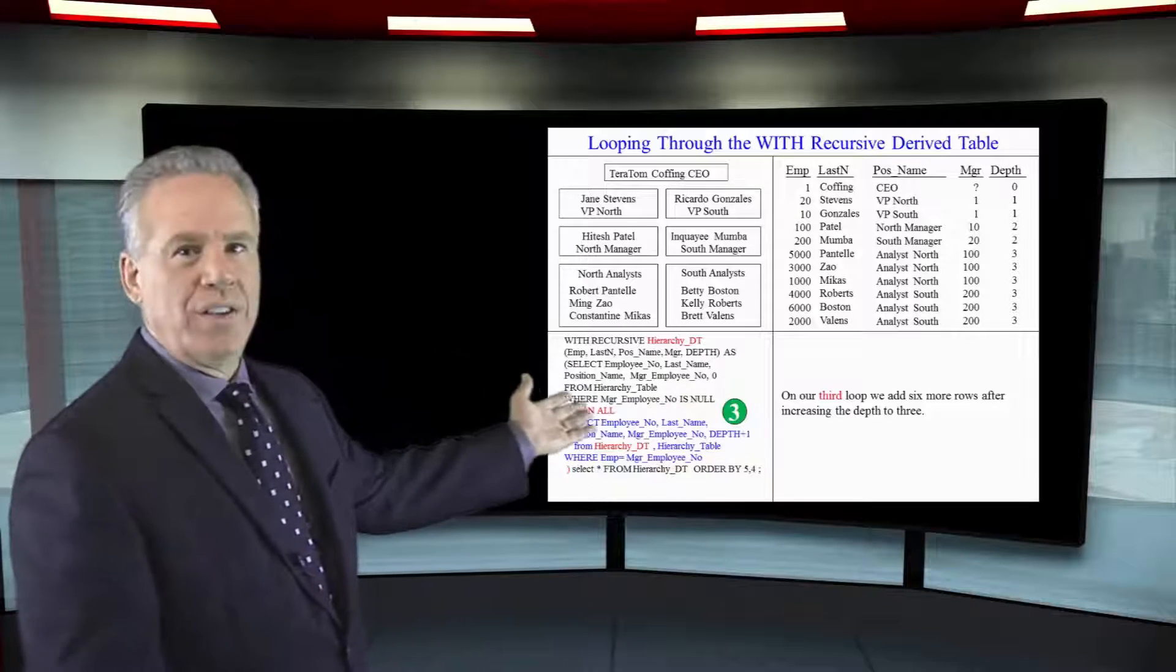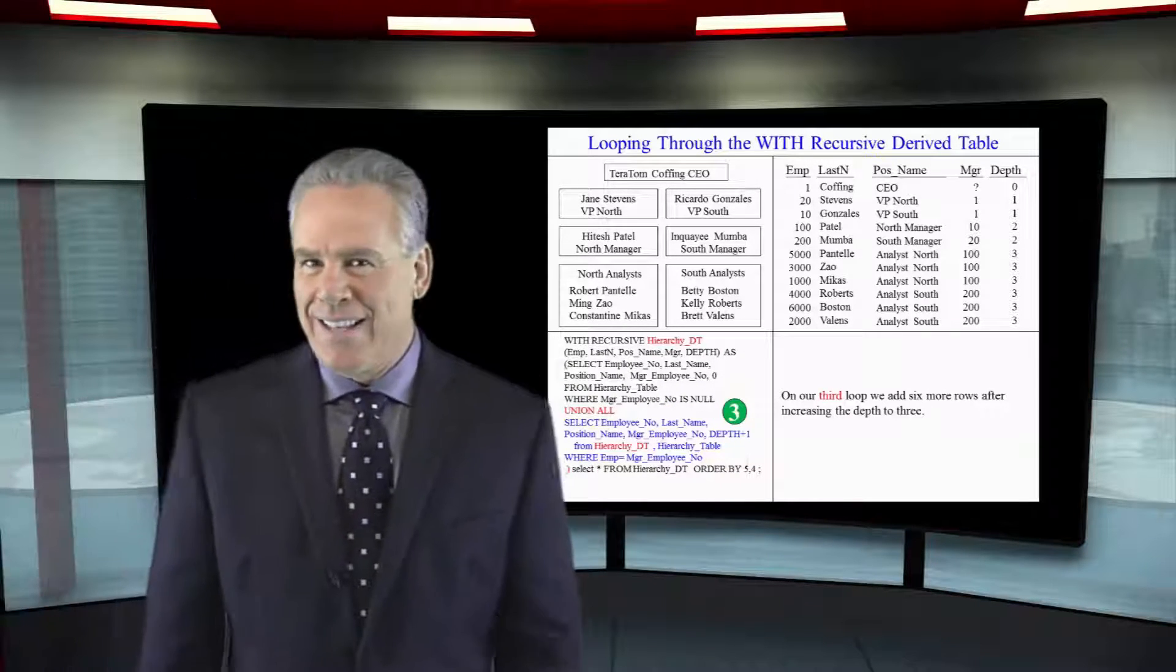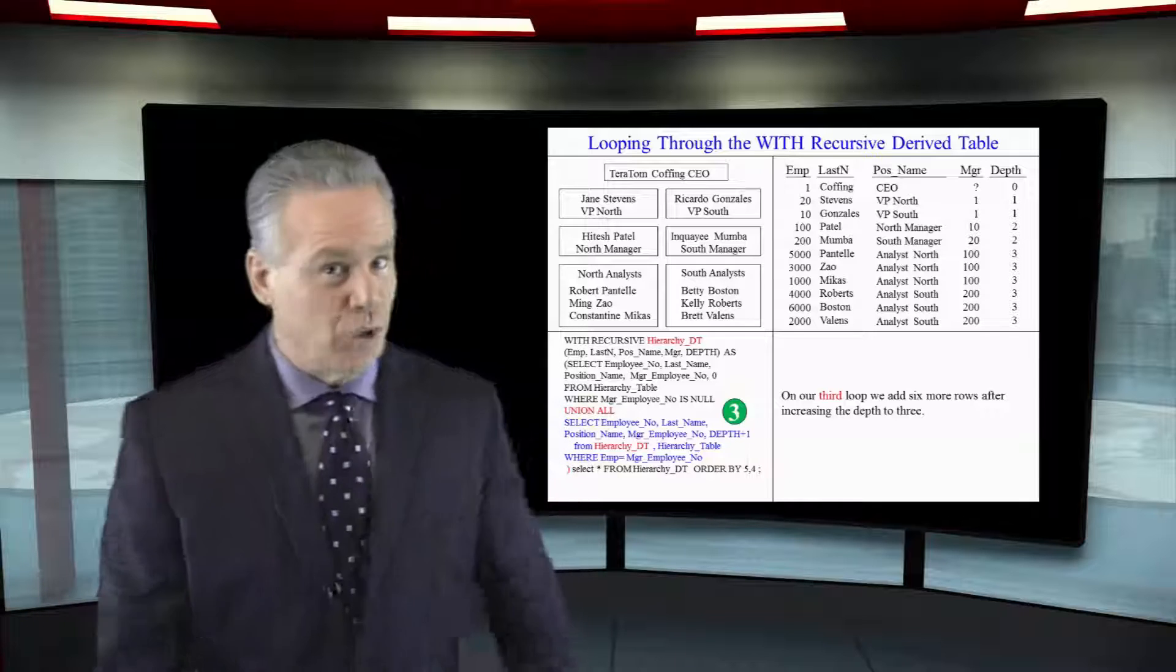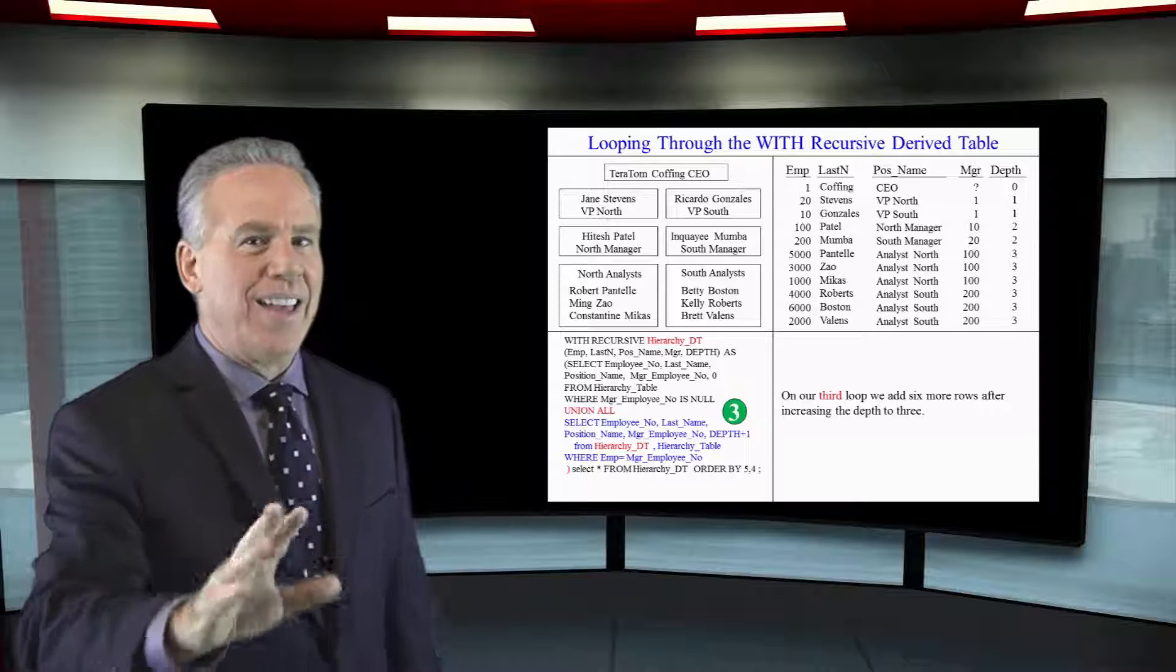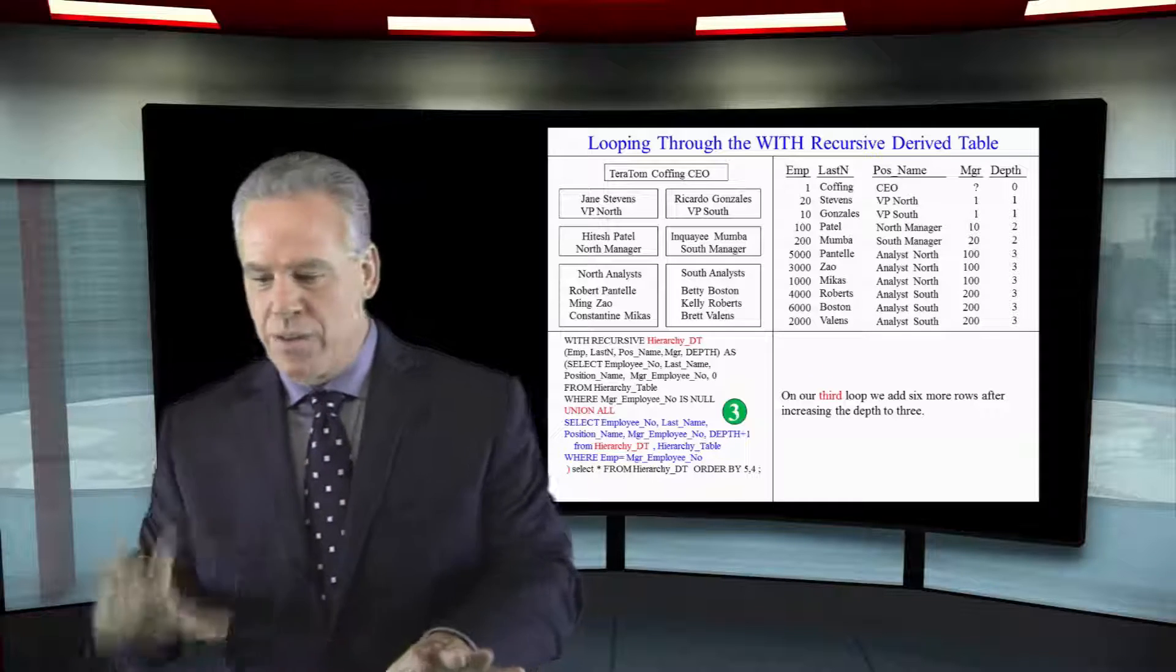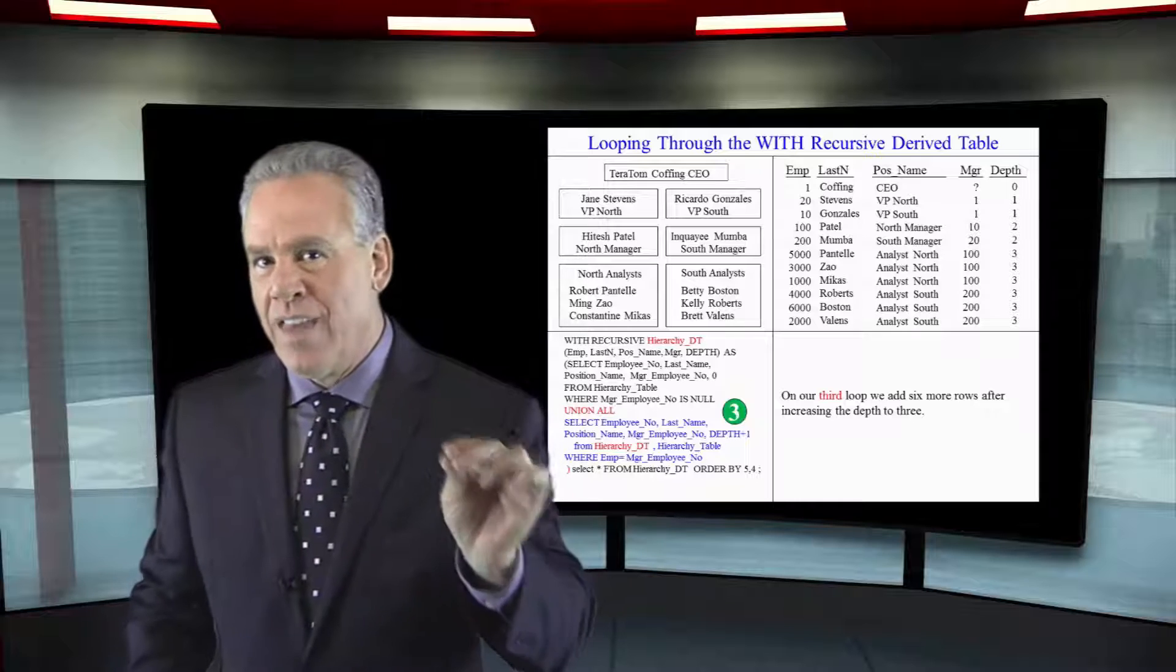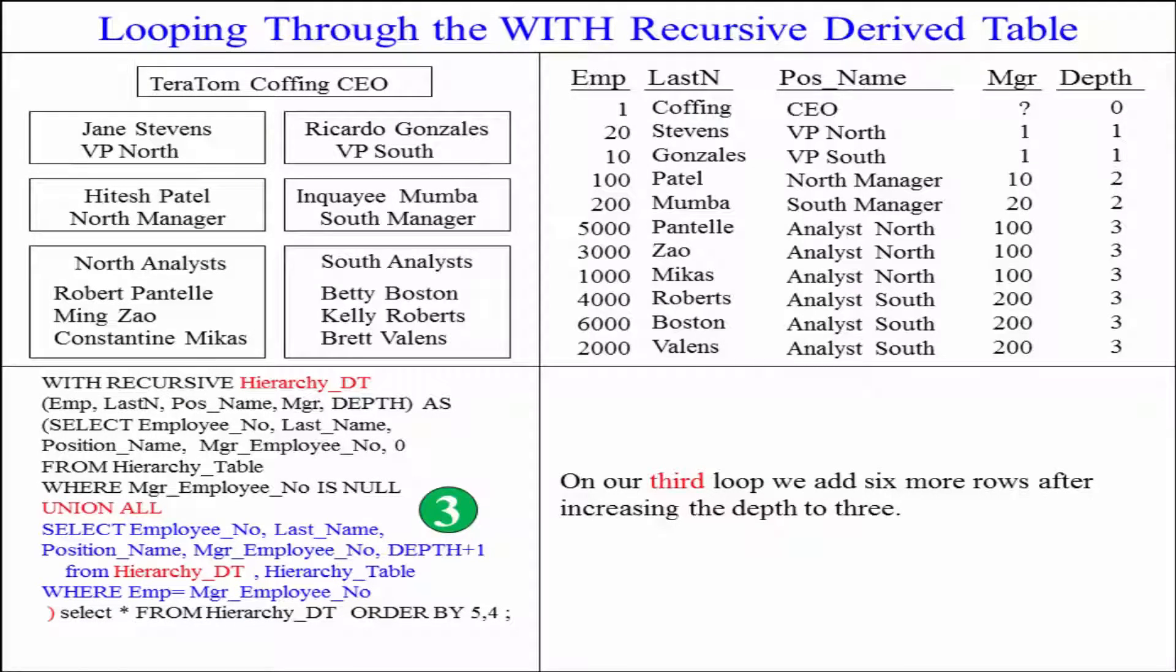Now Teradata adds one to the depth and says okay this is a depth of three. It says did we put anything the last time? It goes oh yes we did. They go well then keep loop until we don't put anything in there and it runs through this loop joining the employee number to the manager numbers that are in that derived table and it says there were six of them and it loads them all in there and now we're almost done.